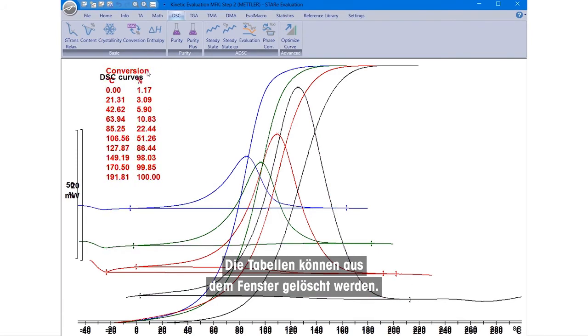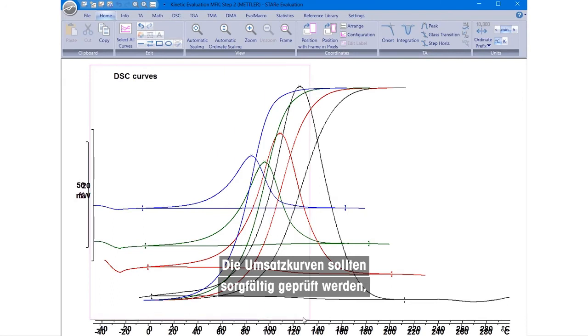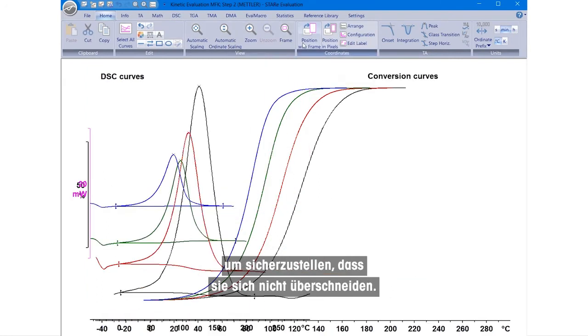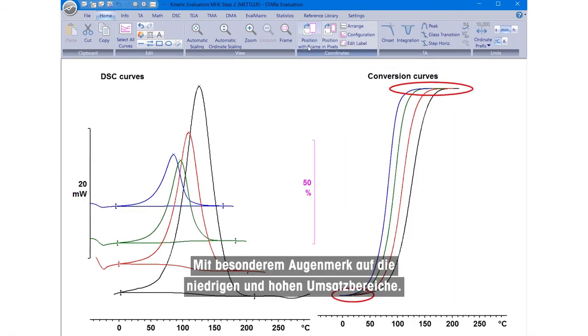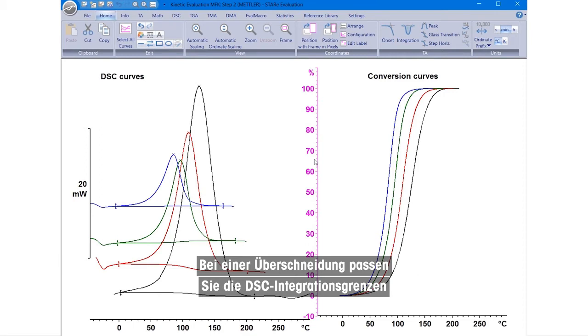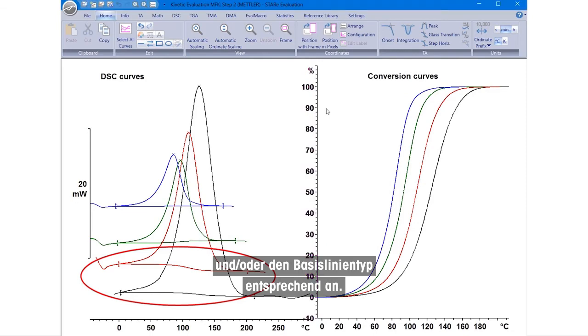The tables can be deleted from the window. The conversion curves should be inspected carefully to make sure they do not cross over each other, paying special attention to the small and high percentage conversion areas. If any crossing over is detected, then adjust the DSC integration limits and or the baseline type accordingly.